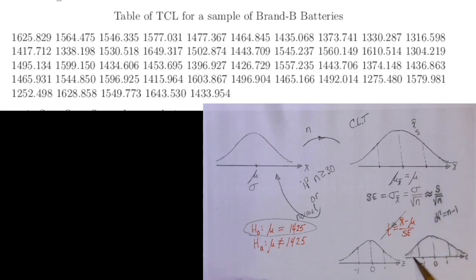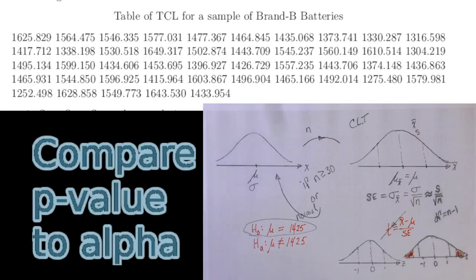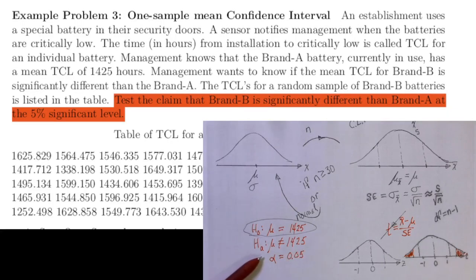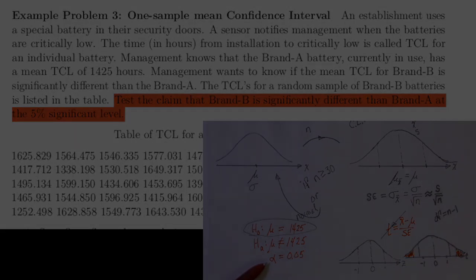If that t-value ends up being negative, we'll need to find the area in the lower tail and multiply it by 2. So our p-value, the thing that we're going to need to compare to alpha, will be the area in those two tails. Oh, I overlooked the alpha. The problem states that we want to test at the 5% significance level, so alpha is going to be 0.05.